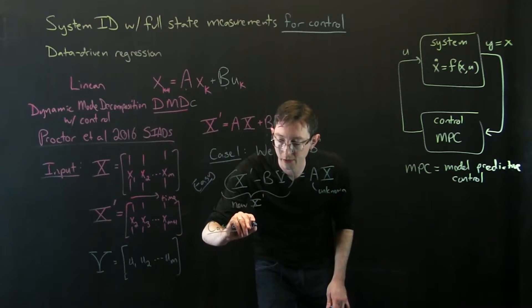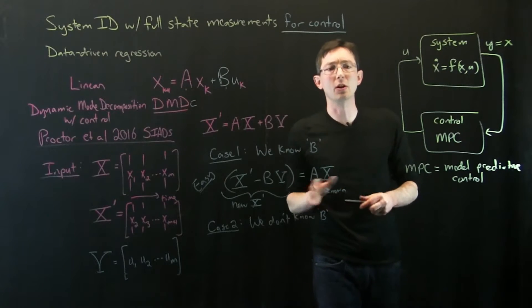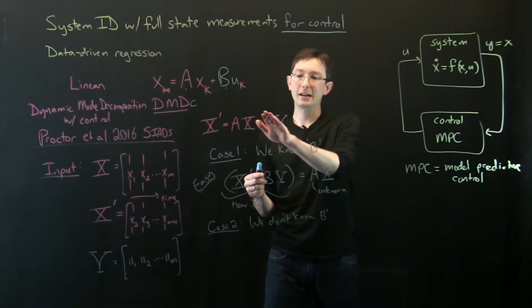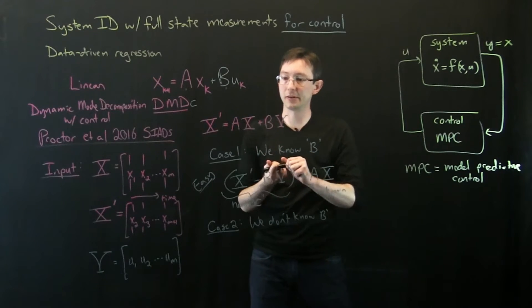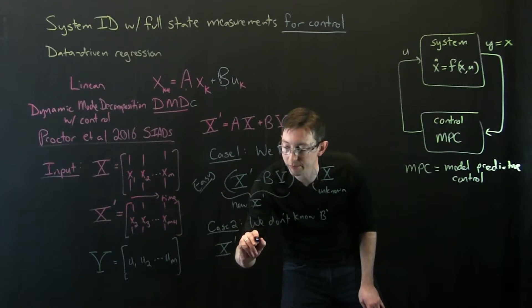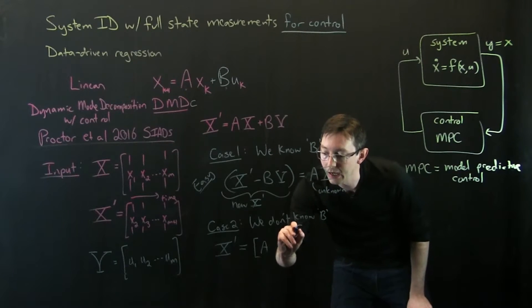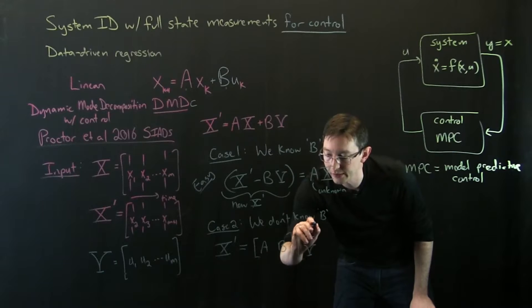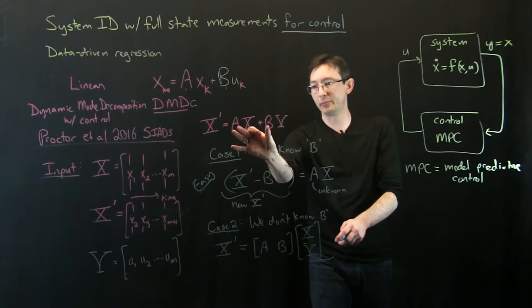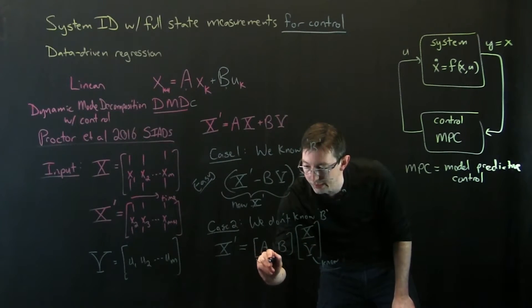So the slightly harder case is case two. And in case two, we don't know B. So in the case that we don't know B, we have to be a little bit more clever. And so what Josh did in this case was essentially, he stacked this up, and I hope I can actually get the matrices right. But he stacks this up into a problem X prime equals, and then what he does is essentially build this into a big AB matrix. So he builds this concatenated matrix times a big X epsilon data matrix. So essentially, he augments the, he splits this up so that you have one big matrix of unknowns and one big matrix of knowns. So we know these, and these are unknown.